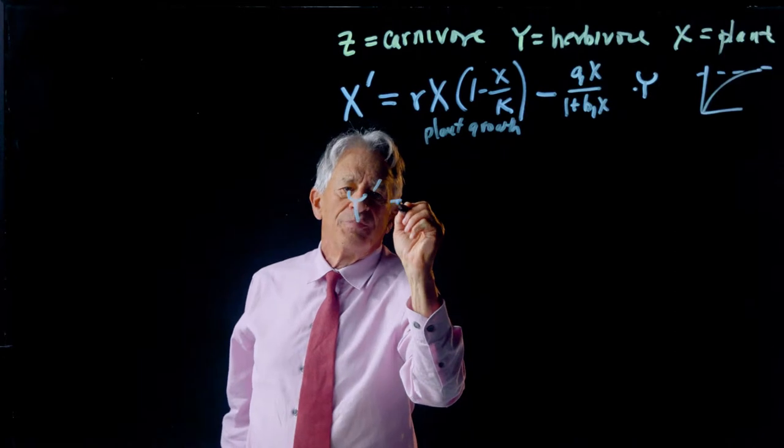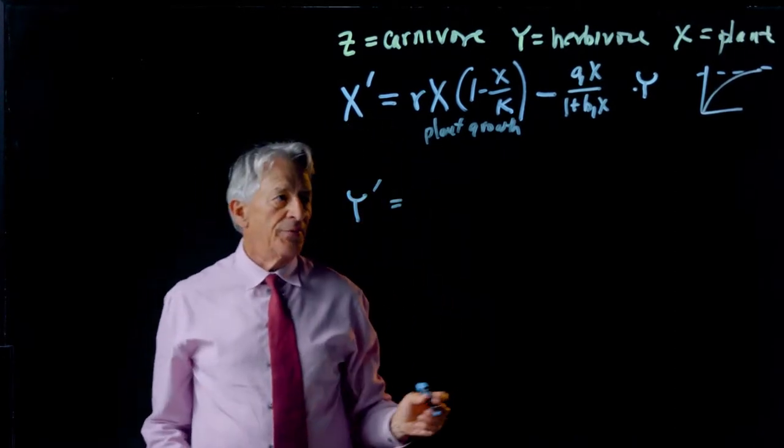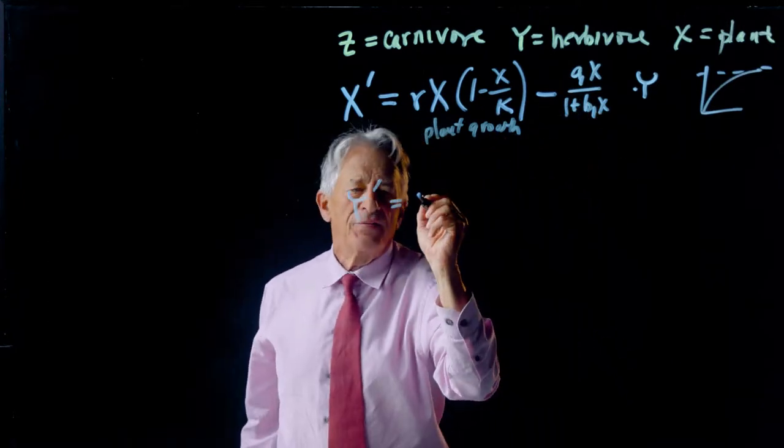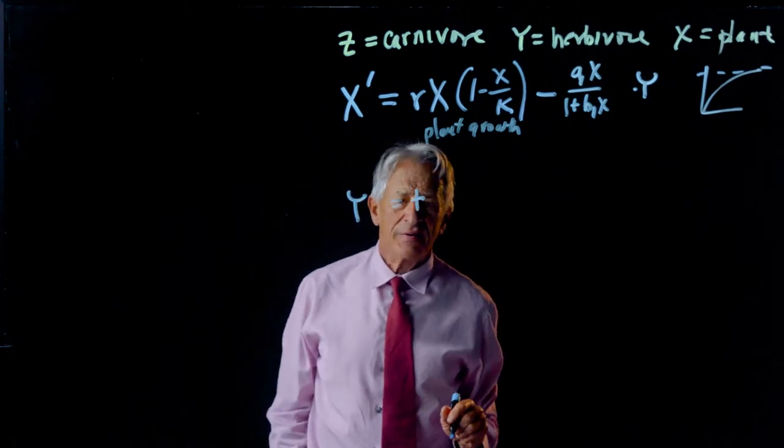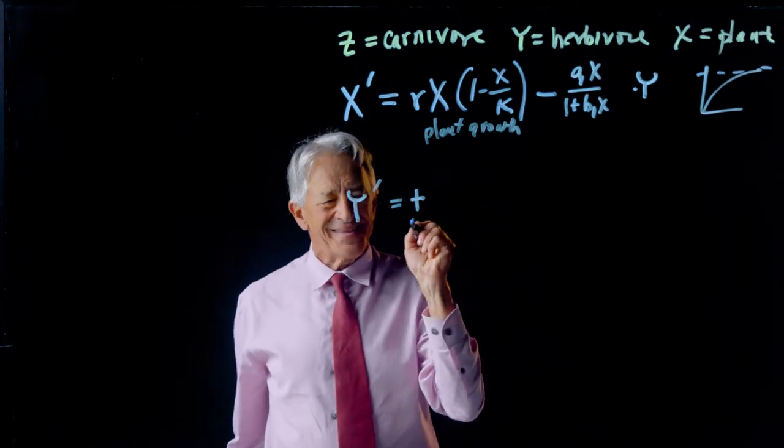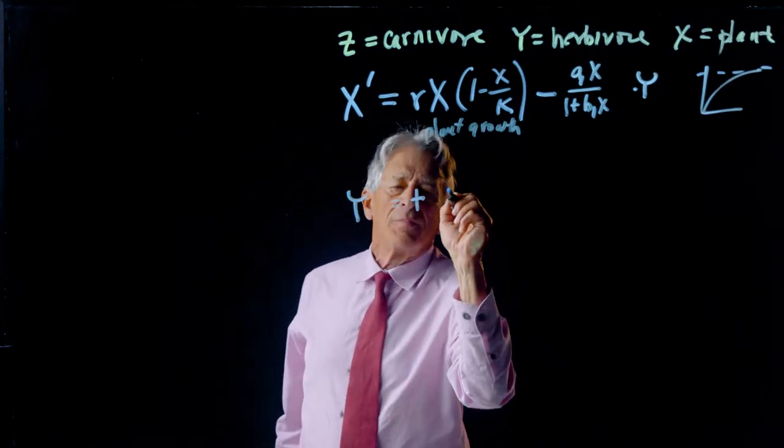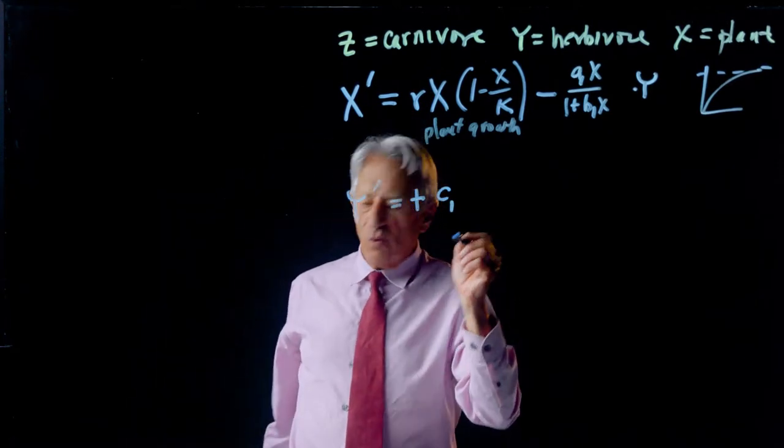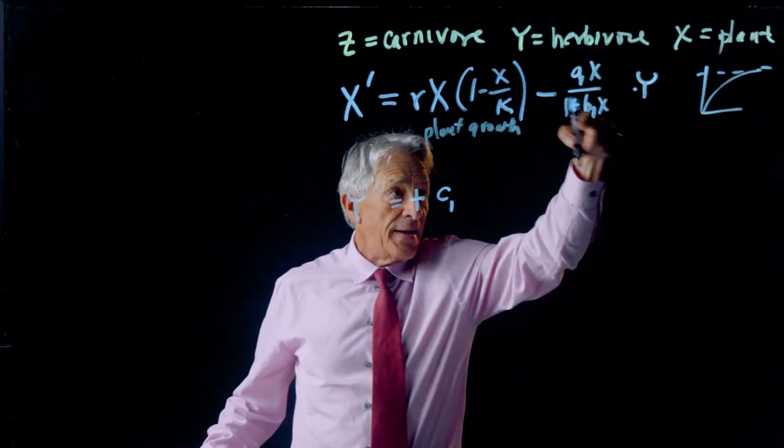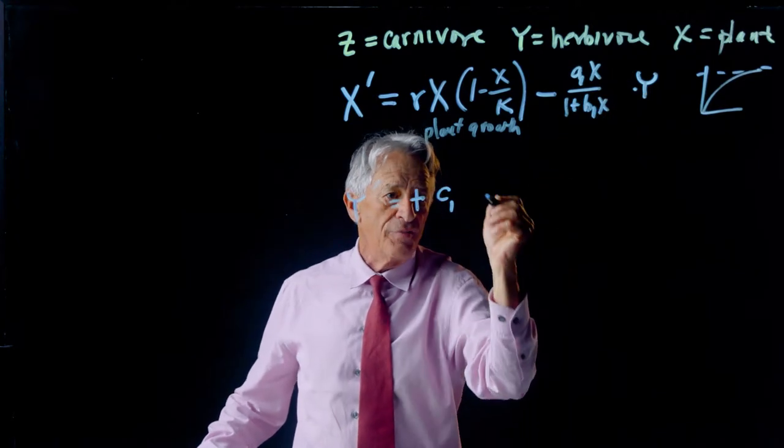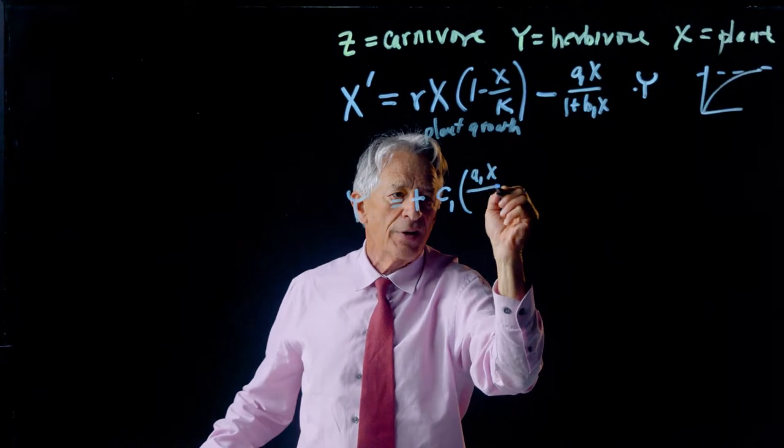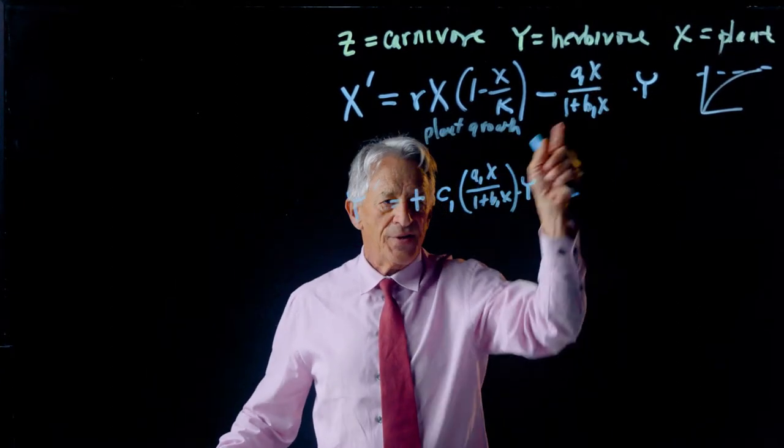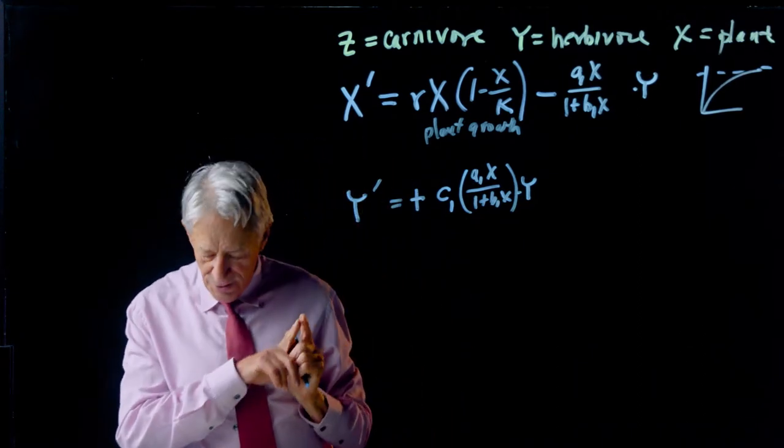Now we need the herbivore differential equation. And in the herbivore differential equation, of course we want to take this herbivore eats plant, and we want to put that in the herbivore equation with a plus sign in front of it instead of a minus sign. And, of course, the question is, how many plants does it take to support one herbivore? And I'm going to call that quantity C. In fact, C1. And we're going to assume, therefore, that that then applies to all of this eating of plants by herbivores. So it's C1 times A1X over 1 plus B1X times Y. That is basically the same term with the C1 for how many plants you need to feed a herbivore.